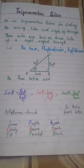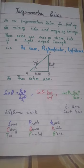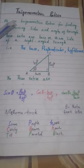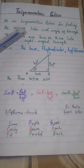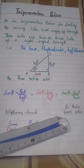Bismillahirrahmanirrahim. Assalamu alaikum to all students. Today our next topic related to trigonometry is trigonometric ratios. We use trigonometric ratios for finding the missing sides and angles of a triangle.